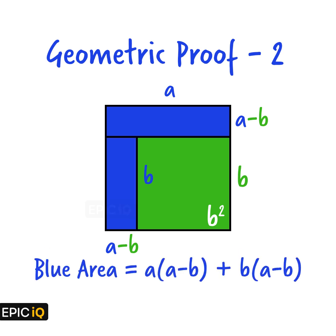We add the areas of these two rectangles, which is a into a minus b plus b into a minus b. a minus b is the common factor, so this area will be a plus b into a minus b.